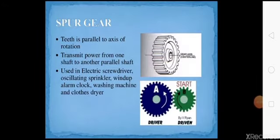First one is the spur gear. Teeth are parallel to the axis of rotation. It transmits power from one shaft to another parallel shaft. Used in electric screwdriver, oscillating sprinkler, wind-up alarm clock, washing machine and cloth dryer.